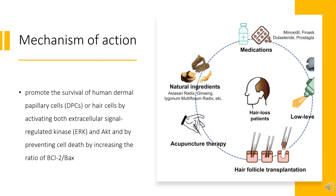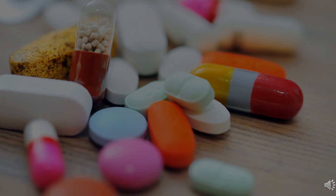Minoxidil may stimulate the growth of human hairs by prolonging anagen through these proliferative and anti-apoptotic effects on DPCs. When used as a vasodilator, minoxidil acts by opening adenosine triphosphate-sensitive potassium channels in vascular smooth muscle cells. This vasodilation may also improve the viability of hair cells or hair follicles.